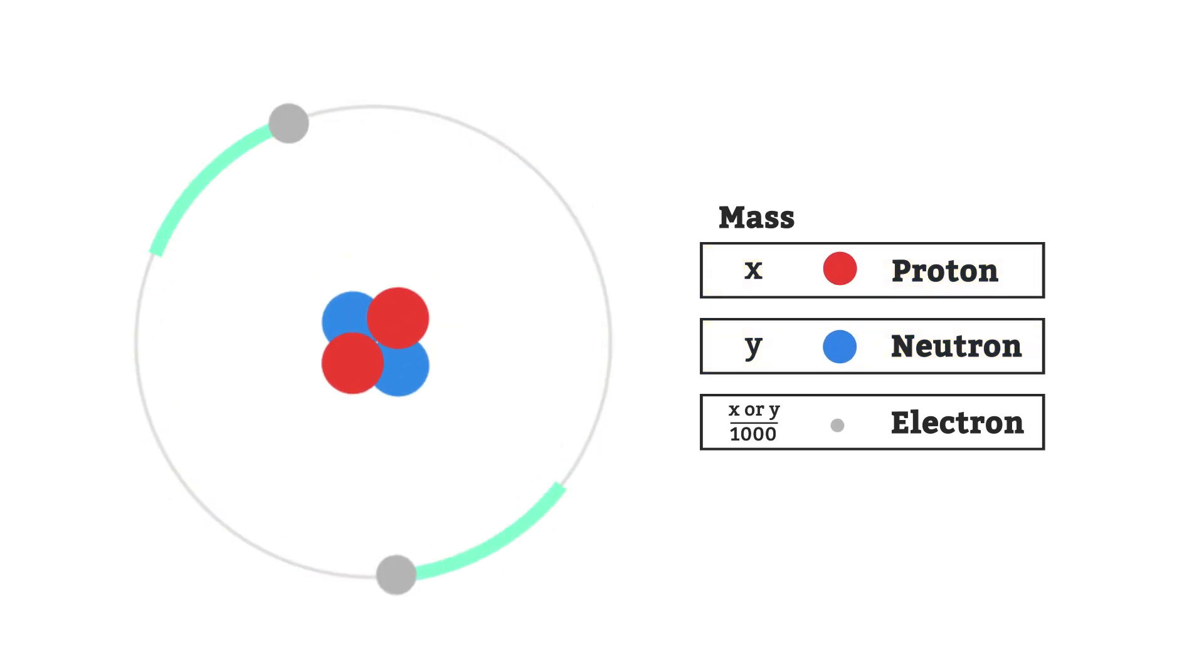Because the mass of the proton and neutron are so much bigger than the mass of the electron, we say that the mass of the electron is essentially zero.